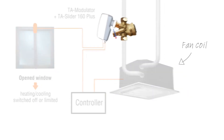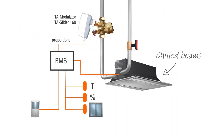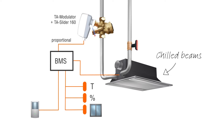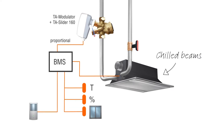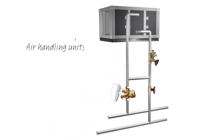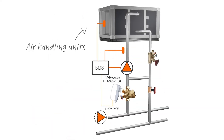While on-off control can deliver air that is too low in temperature from chilled beams and create discomfort, TA Modulator guarantees accurate temperature for optimal comfort and tenant satisfaction. The high flow range of TA Modulator and TA Slider is also ideal for air handling units.